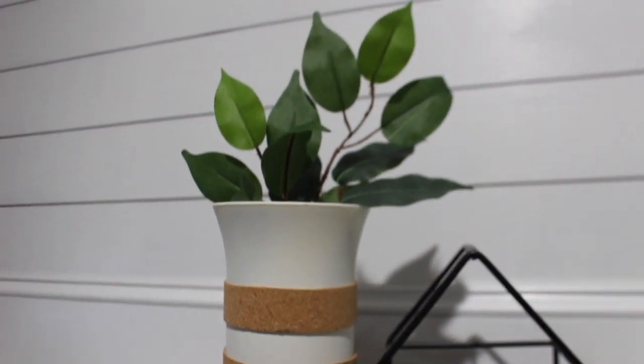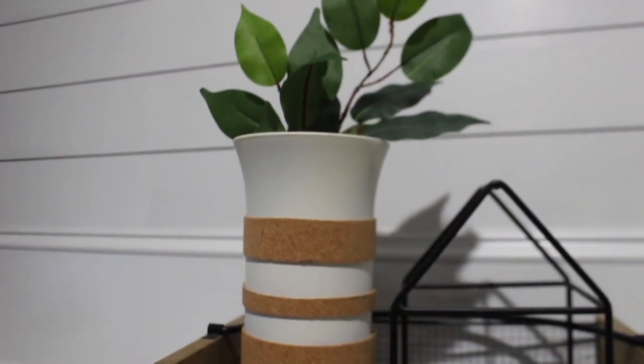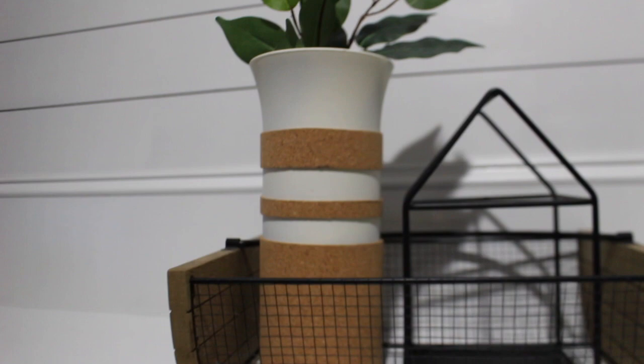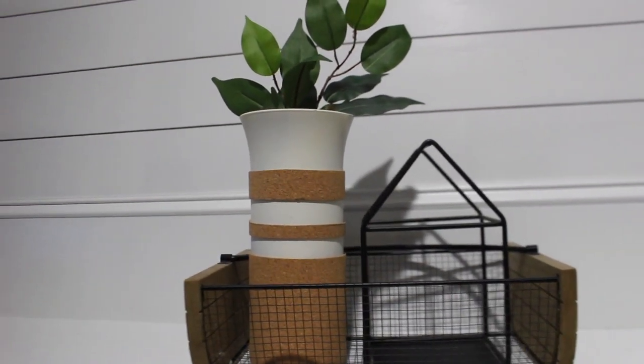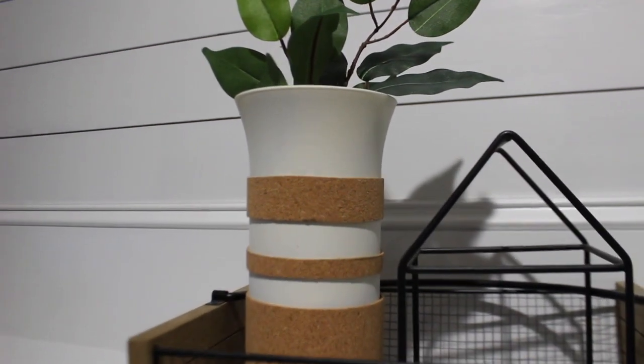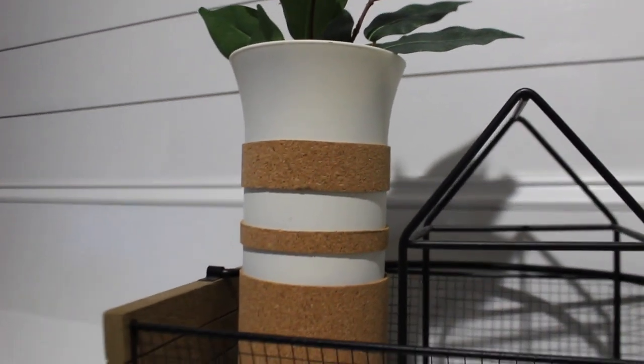So that first one was very simple. I just added some Hobby Lobby greenery in there. Just a different take on how you can add more of a high-end modern look to any type of vase. And those two other items are from the Target dollar spot that I've been having for a few years now.